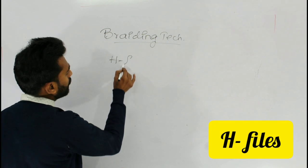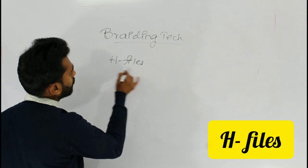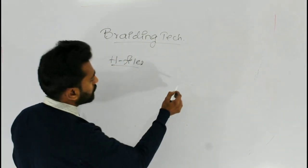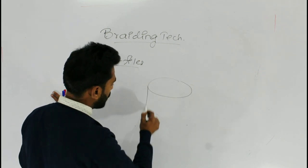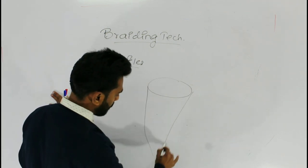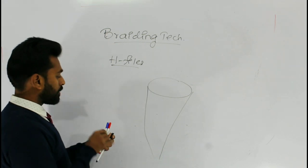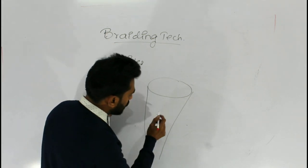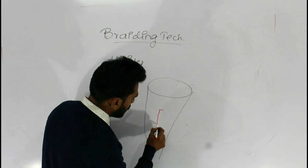So, here H-files are used. Suppose these are the canal orifices and these are the root canal. Somewhere around here is the separated instrument, right?